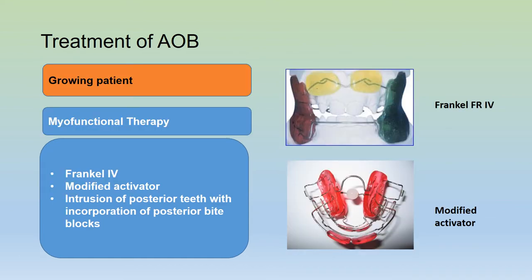Treatment of anterior open bite in a growing patient can be done with the use of myofunctional appliances. Examples are the Fränkel appliance and a modified activator, and these usually achieve intrusion of posterior teeth with the incorporation of posterior bite blocks.